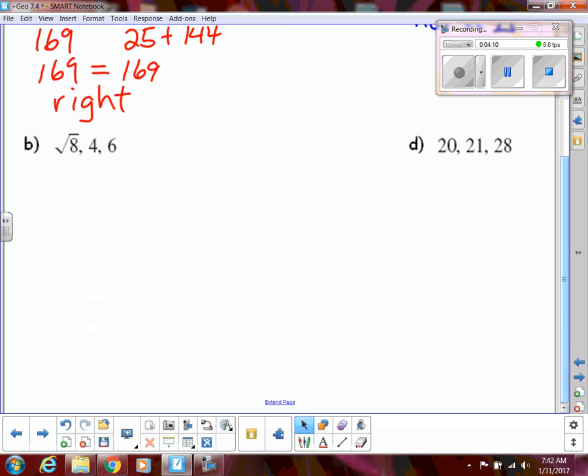All right, same idea here. Square root of 8 is going to be approximately 2.83. So, we're going to do that plus 4 and make sure it's greater than 6. And yes, that'll be greater than 6. Just a little bit over, but good enough. So, that is a triangle.